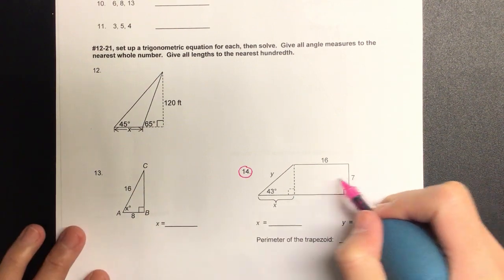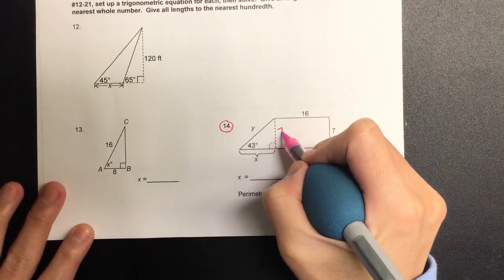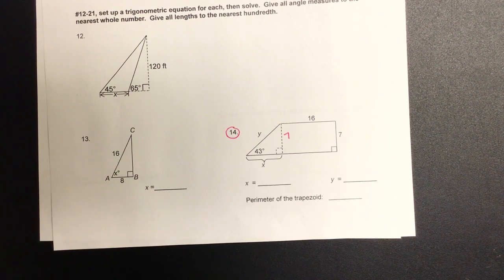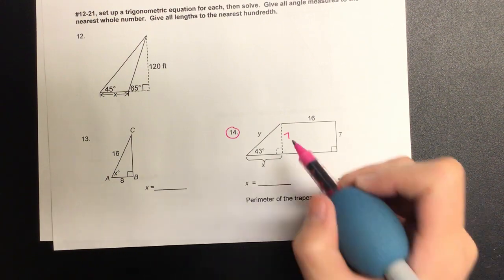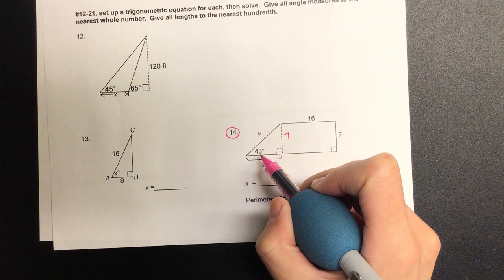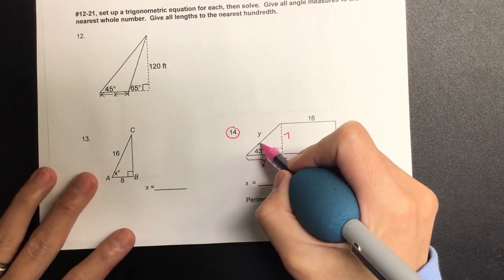Could I move the seven over to the left? And since I know we have seven and we have forty-three degrees, I want to look at it from that angle.